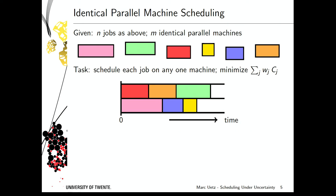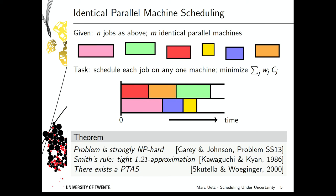Now suppose we want to schedule the same jobs on a set of identical parallel machines, still minimizing the total weighted sum of completion times. On identical machines the problem gets more interesting but is also essentially settled. It is listed as strongly NP-hard in the book by Garey and Johnson. Doing Smith's rule — whenever a machine is idle, pick the job with the highest remaining weight-to-processing-time ratio — is known to be a 1.2-approximation, tight by Kawaguchi and Kuan. And since about 15 years we know there exists a PTAS, so this case is essentially closed.